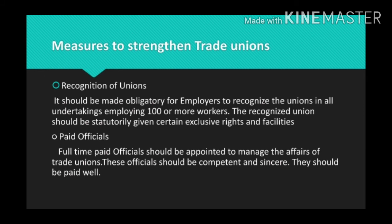A trade union seeking recognition as a bargaining agent should have a membership of 30% of the workers in the establishment. For an industry, 30% of the workers should be in the trade union to function as a bargaining agent. The recognized union should be statutorily given certain exclusive rights and facilities, meaning that if you have a union in the industry, the rights of the workers will be upheld.